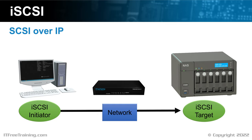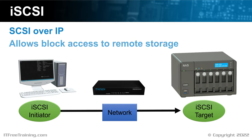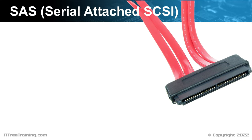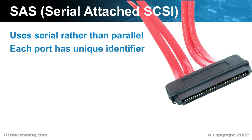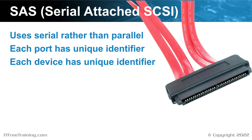iSCSI is different to sharing files over the network, as it provides block access to the remote storage. Block access essentially means the operating system will access it the same way as locally-attached storage. The remote storage will appear to the operating system just like a hard disk and can also use the same low-level instructions as a hard disk would. The most common implementation of SCSI that you would come across today is serial-attached SCSI, otherwise known as SAS. SAS uses serial rather than parallel for communication. Serial communication nowadays can obtain much higher transfer rates than parallel due to the difficulty of keeping parallel data in sync. Each port in SAS has its own unique identifier, and also each device has its own unique identifier. This replaces the need for LUNs.